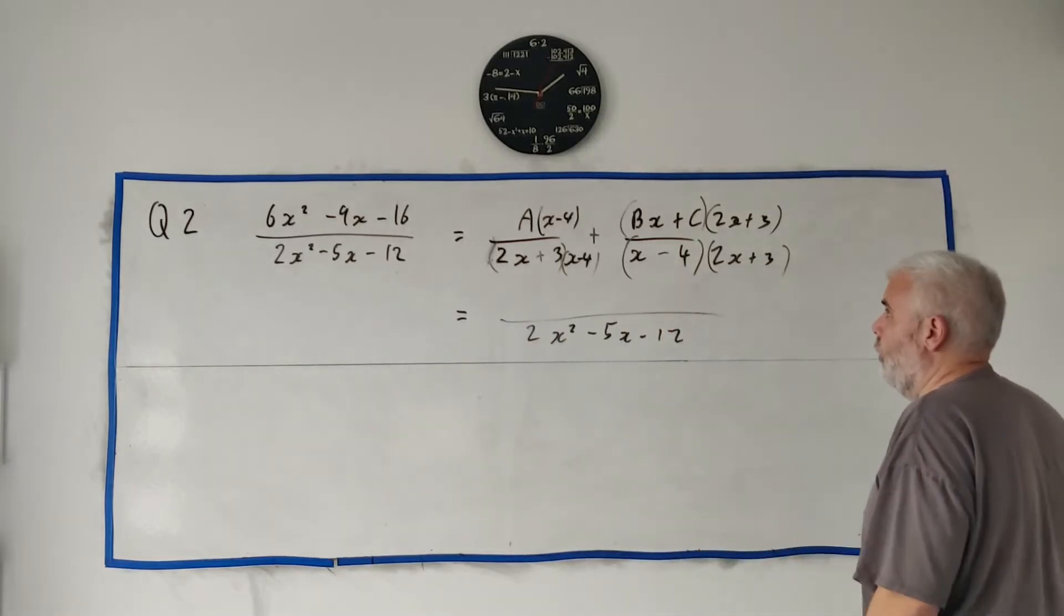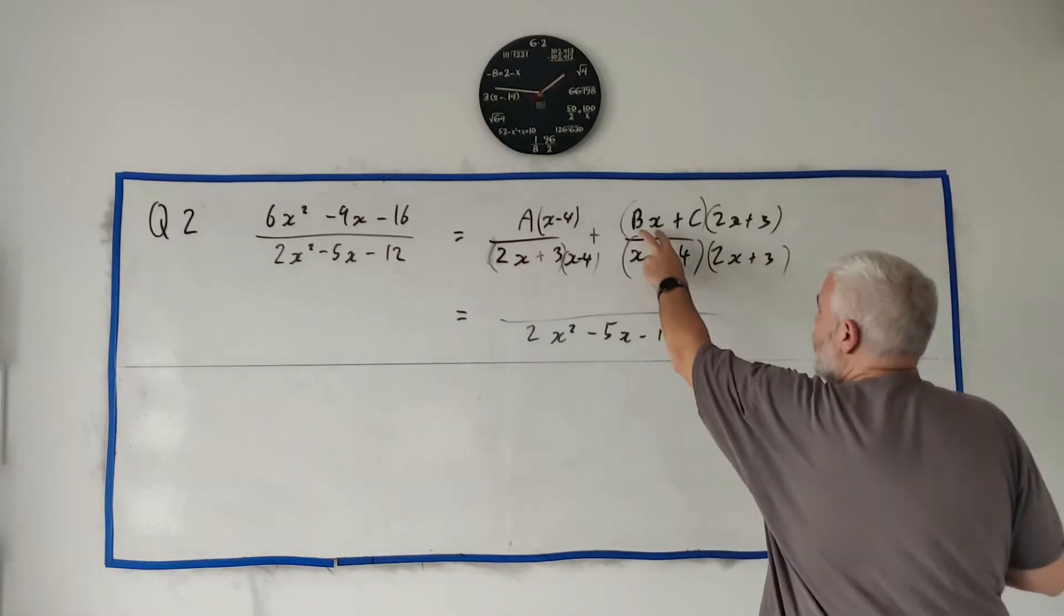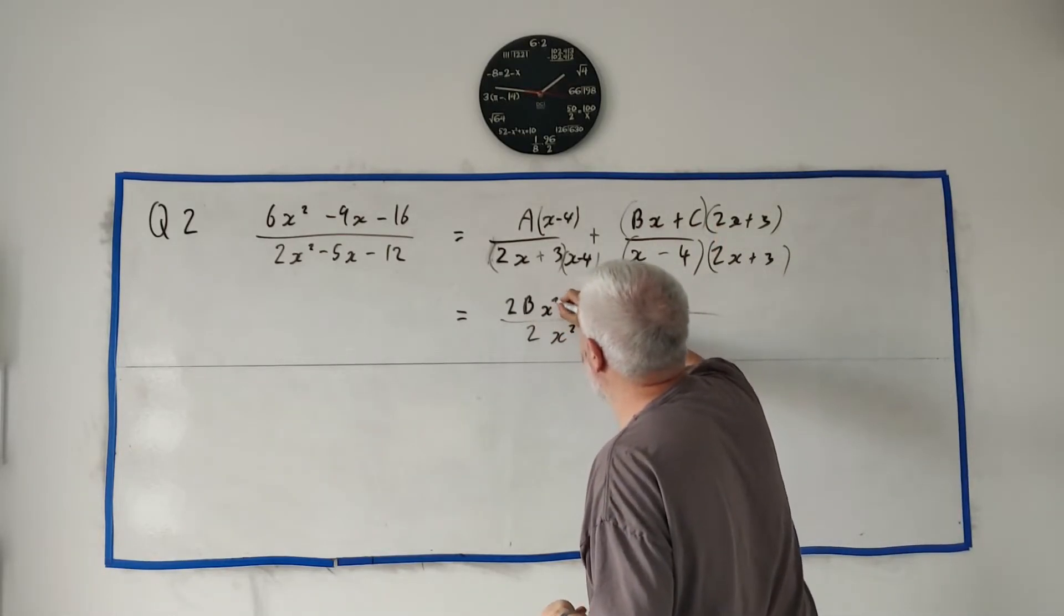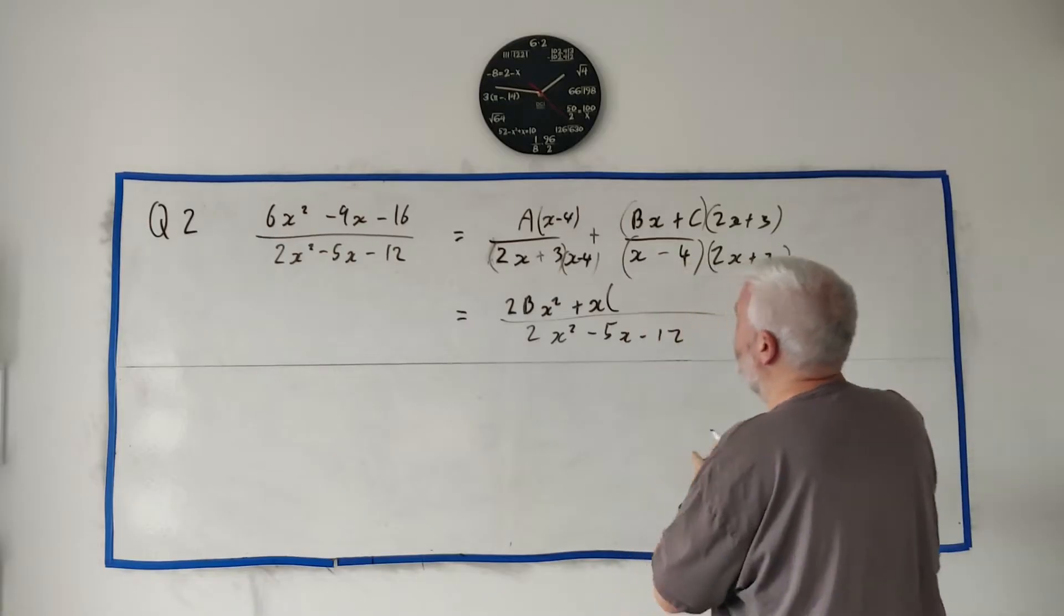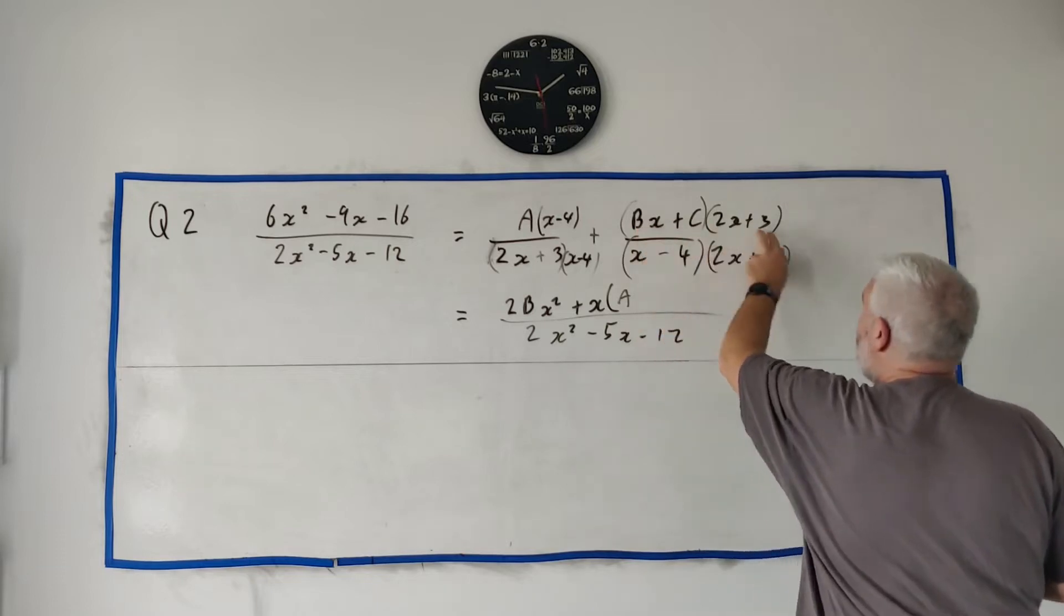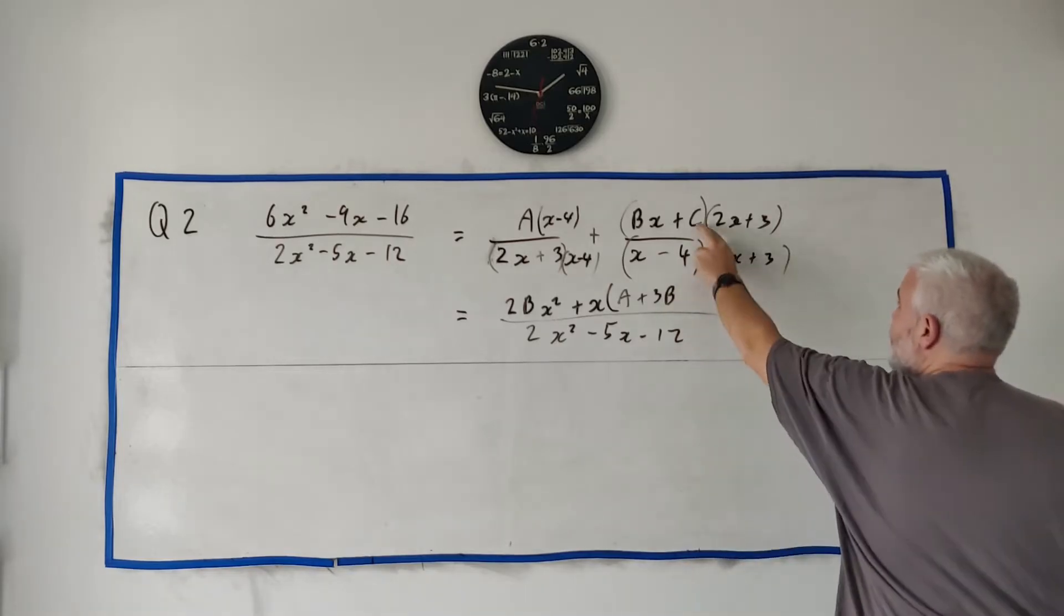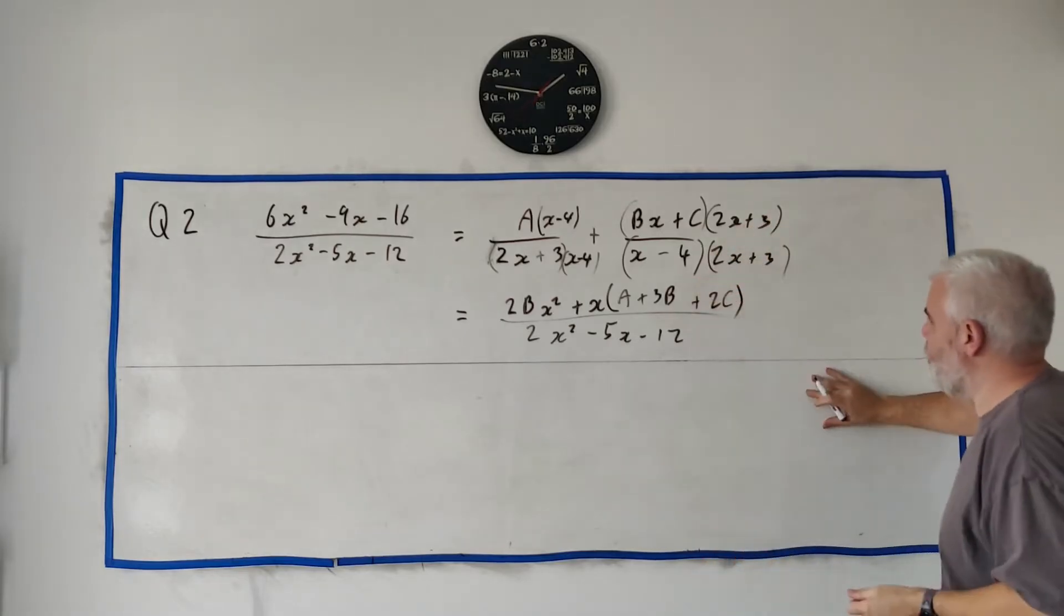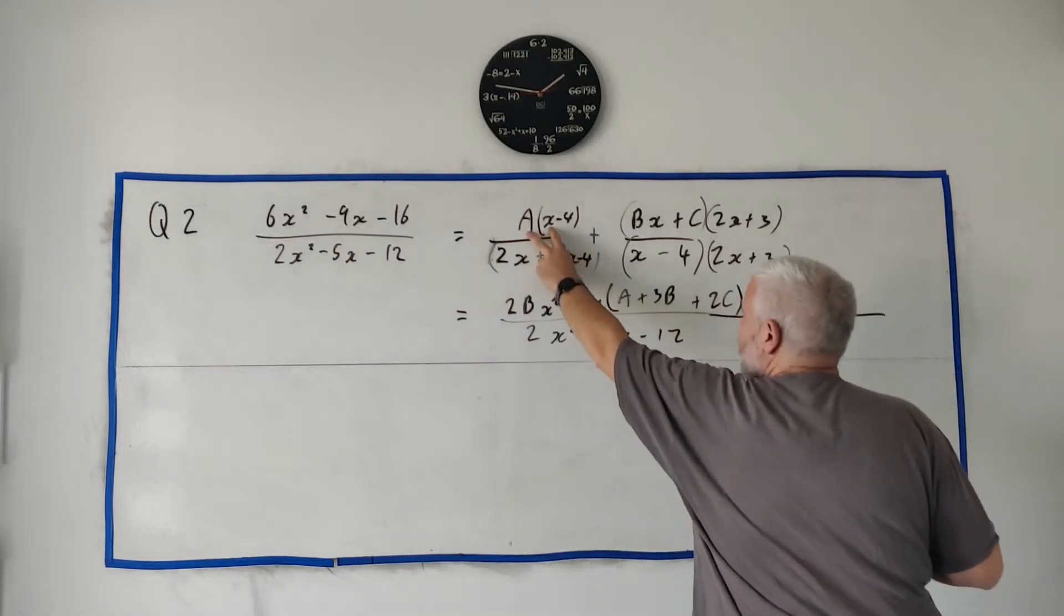The top row is the interesting one, though. We would get lots of different terms out. Some of them would be X squared. For example, BX times 2X would get out 2BX squared. There would be lots of X terms. Let's write them all here. There would be X would multiply by an A, so we'd get an A there. X would multiply by this 3, or BX by this 3, so we'd get 3B. We'd get C would multiply by this 2X, so we'd get plus 2C. I think that's all the X terms. Continue this on. And then we'd get terms with no Xs in them. For example, minus 4A.